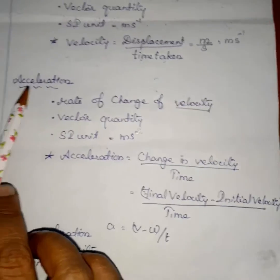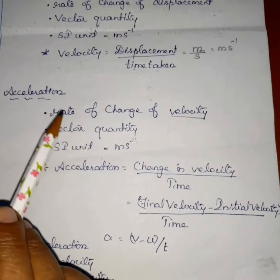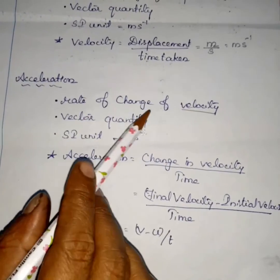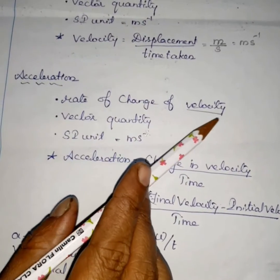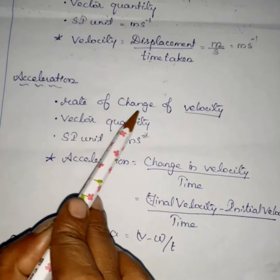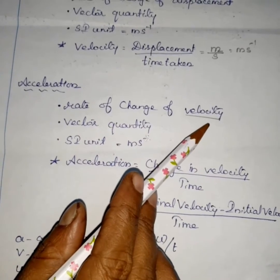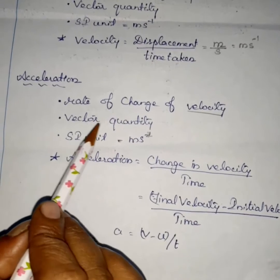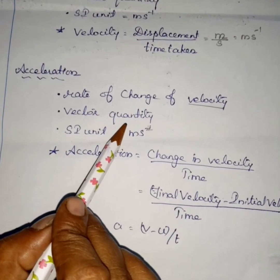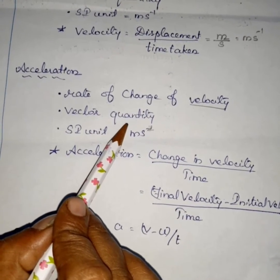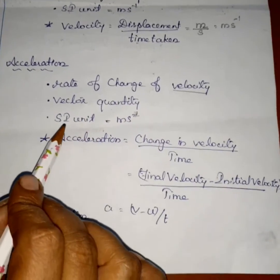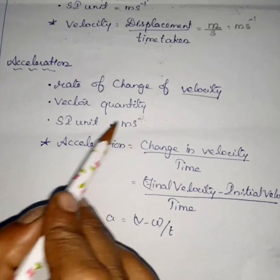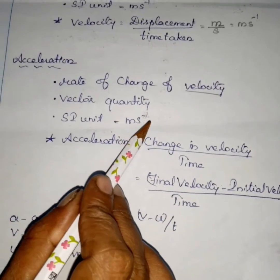We are going to study acceleration. What is acceleration? Acceleration is the rate of change of velocity in unit time. It is a vector quantity because it is having both magnitude and direction. The SI unit of acceleration is meter second power minus two.